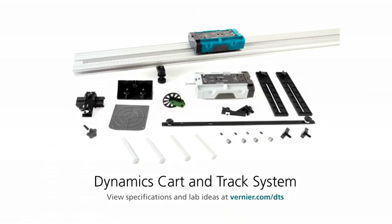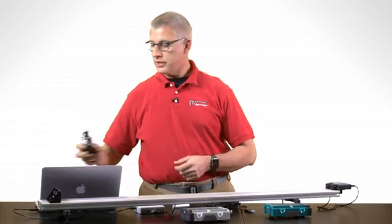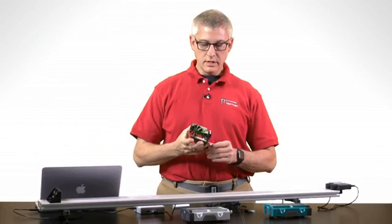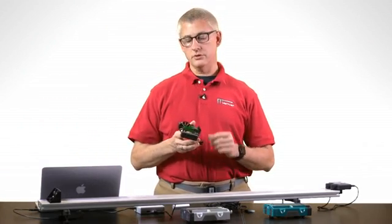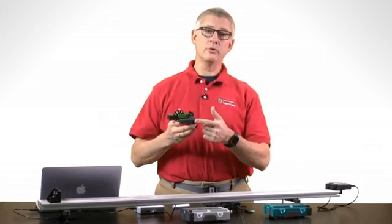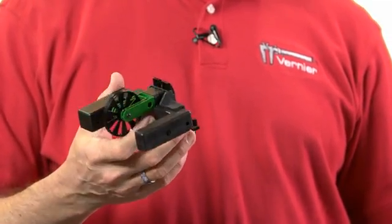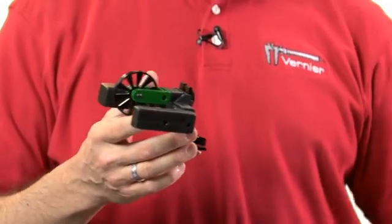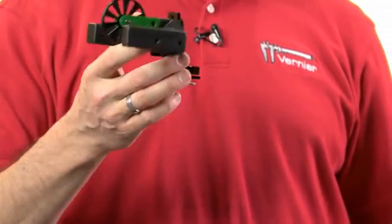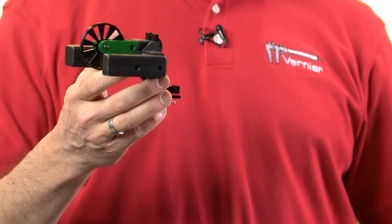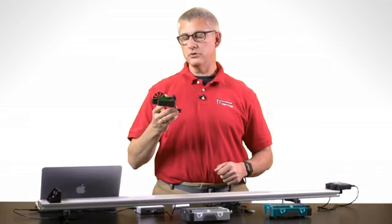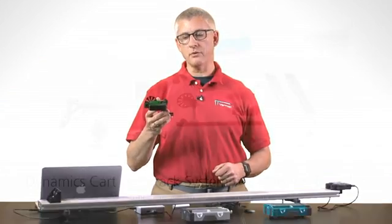There are other pieces that come with the dynamics cart and track system. For example, many times physics instructors want to use a pulley with a photogate attached to the end of the track. The dynamics cart and track system comes with a bracket and a pulley so that you can add your photogate and do experiments such as a half-atwoods machine.